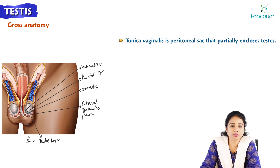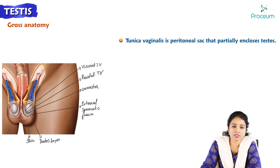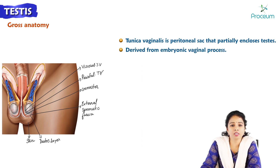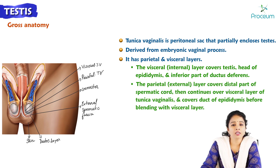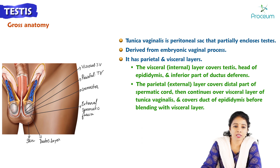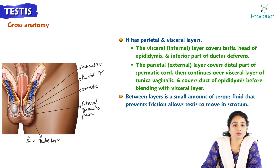Tunica vaginalis is a peritoneal sac that partially encloses the testis. It is derived from the embryonic vaginal process and has a parietal layer and a visceral layer. The visceral internal layer covers the testis, the head of the epididymis, and inferior part of ductus deferens. The parietal external layer covers the distal part of the spermatic cord and continues over the visceral layer before blending with it. Between the layers is a small amount of serous fluid that prevents friction and allows the testis to move in the scrotum.